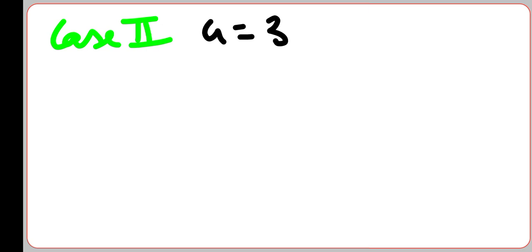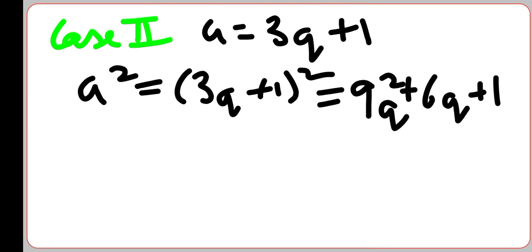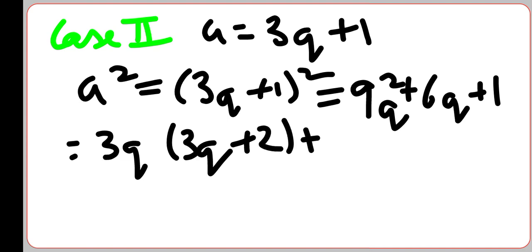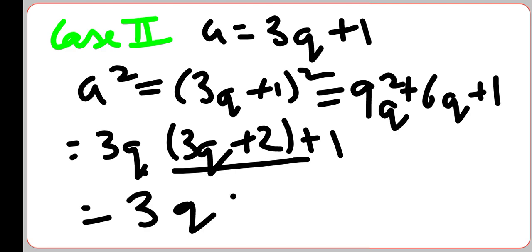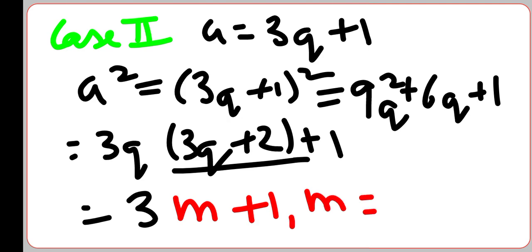Case 2: When A = 3Q + 1. Squaring both sides: A² = (3Q + 1)² = 9Q² + 6Q + 1 = 3(3Q² + 2Q) + 1 = 3M + 1, where M = Q(3Q + 2).